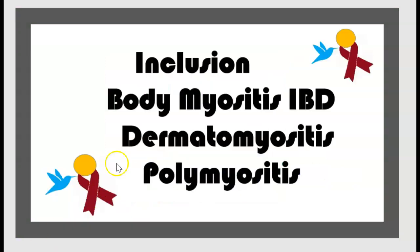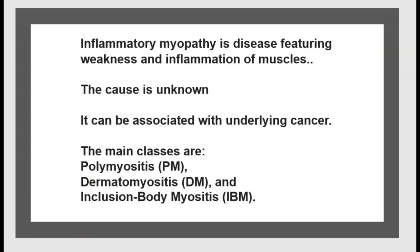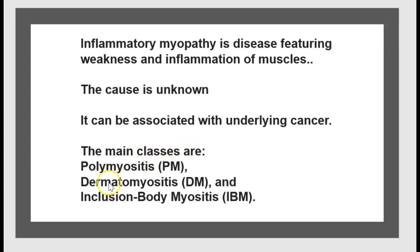Today's topic includes Inclusion Body Myositis (IBM), Dermatomyositis (DM), and Polymyositis (PM). Inflammatory myopathy is a disease featuring weakness and inflammation of muscles. Because it is an autoimmune condition, it can be associated with underlying cancer. The main classes are Polymyositis (PM), Dermatomyositis (DM), and Inclusion Body Myositis (IBM).